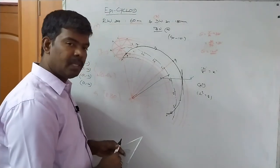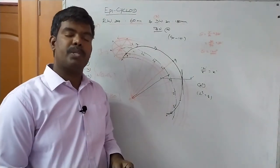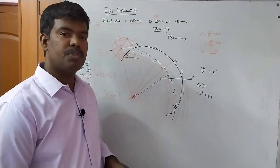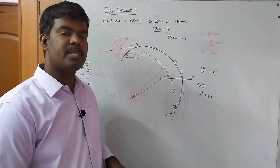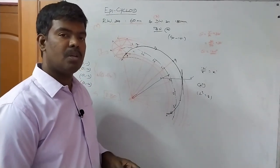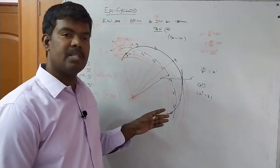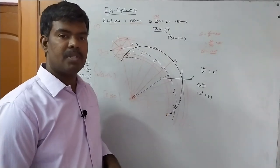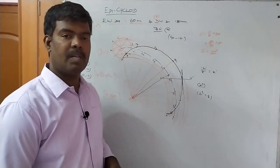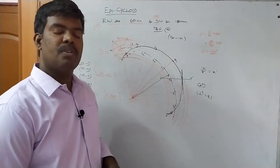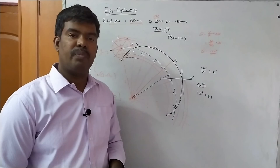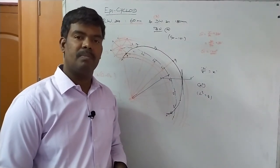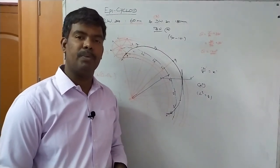That's all students. This is the procedure for constructing an epicycloid and drawing a tangent and normal for a given dimension or anywhere on the curve. In the next videos we will cover other special curves. Thank you.